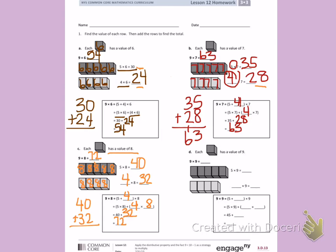Letter D. Each cube has a value of 9. So I'm going to find the answer for 9 times 9. 1 9, 2 9s, 3 9s, 4 9s, 5 9s. Continuing with my pattern. I have 30, 35, 40, 45.